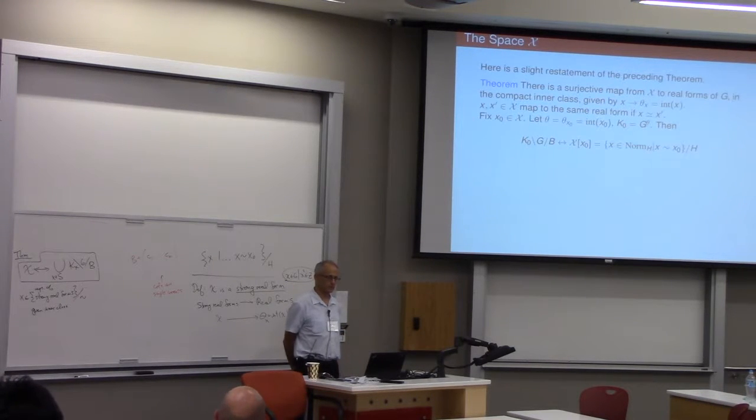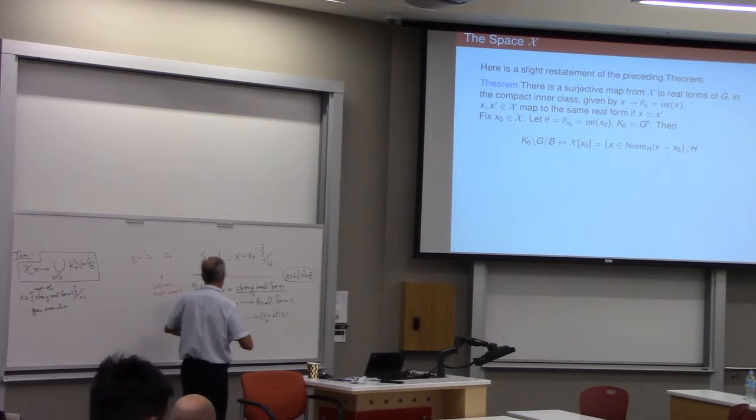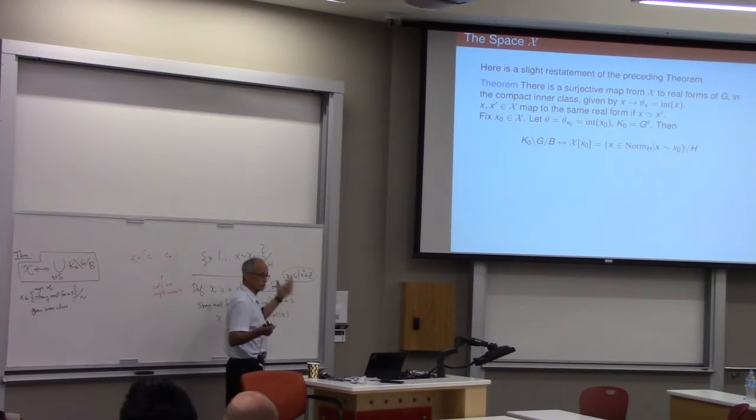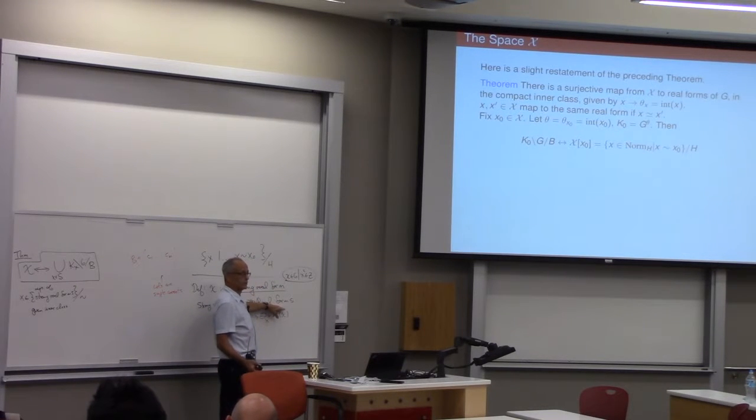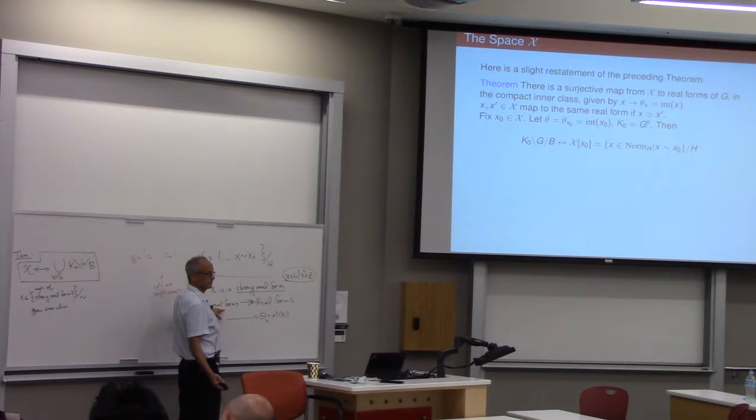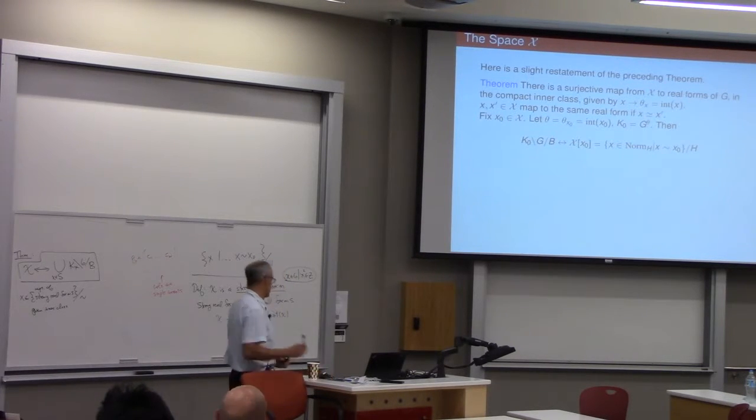So here's a slight restatement of the preceding theorem. So how about all the other real forms that are not strong real forms? This map is surjective. The theorem says this map is surjective. So never mind strong real forms, you're interested in real form, pick that real form. Now you need to run the software and you have to pick an X. So for that you have to go over here and pick an X to use. But once you've done that, then you're in business.